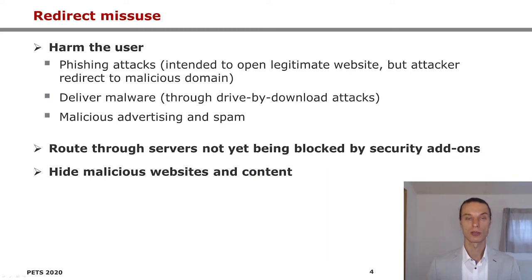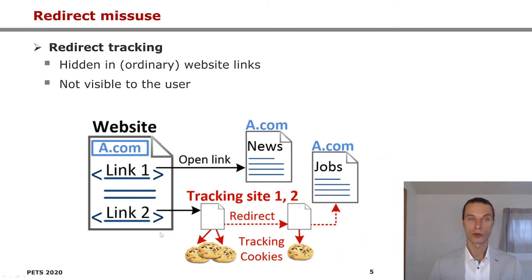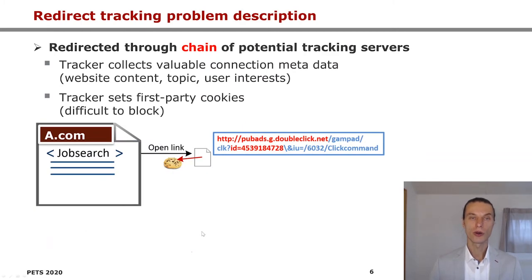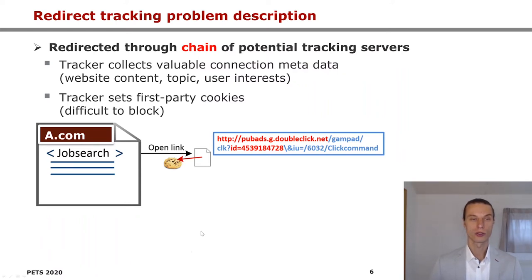In addition, there exists a form of tracking hidden behind ordinary website links, not clearly visible to the user. Here the tracker redirects the user through a chain of potential tracking servers to collect valuable metadata, like website content, topic, or user interest, and also to set first-party cookies, which are more difficult to block. Here we will visualize the method.